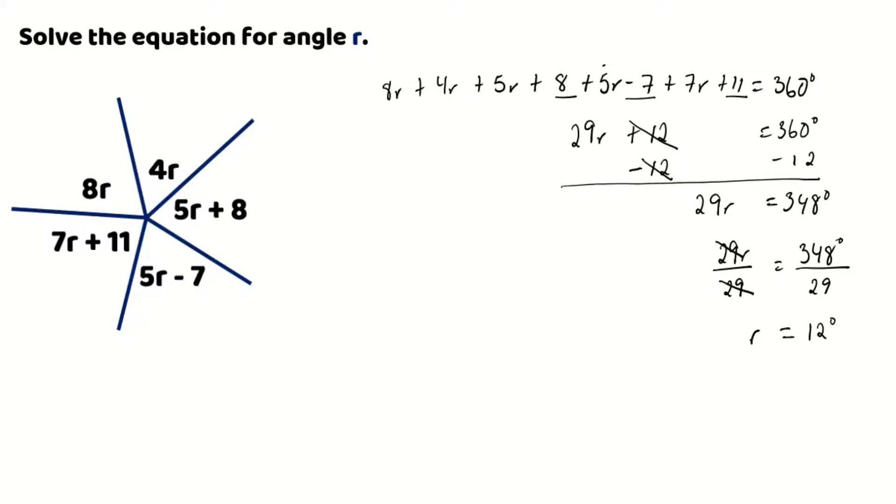So our r for our equation is equal to 12 degrees. And after we've found the measure of our r, this doesn't mean that we've completed solving our equation. You have to remember that all of the parts in our diagram all have an r term attached to them. So we have to go back and work on each of these expressions to find out what is the actual degree or the actual measurement for each of these different parts.